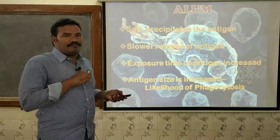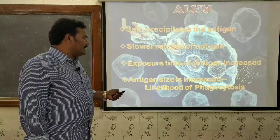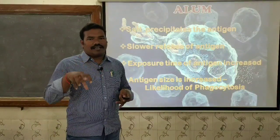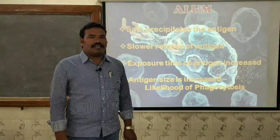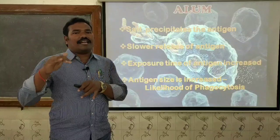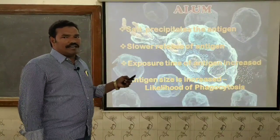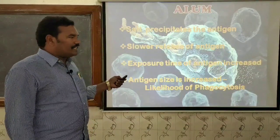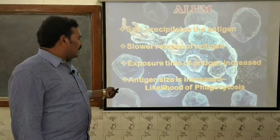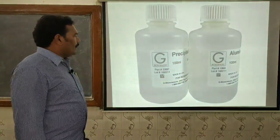Due to the nature of the alum salt, there is also an enhancement in the molecular size of the antigen, which leads to easier phagocytosis. If the antigen is very small or soluble, there is no likelihood of phagocytosis. When mixed with alum, the antigen is enhanced in size, making it a macromolecule easily susceptible to phagocytosis. So alum precipitates the antigen, causes slower release, increases exposure time, and increases antigen size.